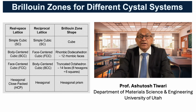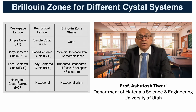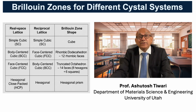Now that we understand what a Brillouin zone represents, let us look at how its shape depends on the type of crystal structure. Remember, the Brillouin zone is constructed in reciprocal space, so its geometry depends on the reciprocal lattice, not the real one. For a simple cubic lattice, the reciprocal lattice is also simple cubic, so the first Brillouin zone is a cube.